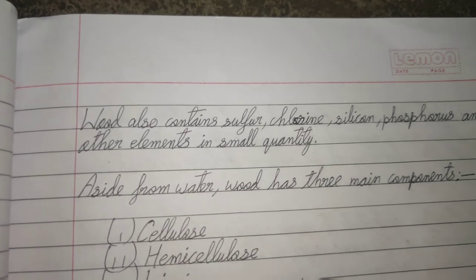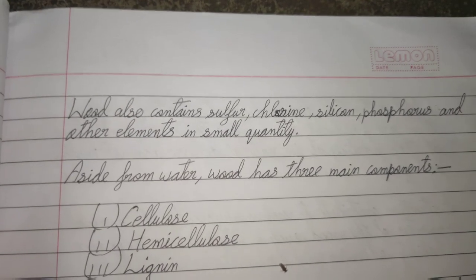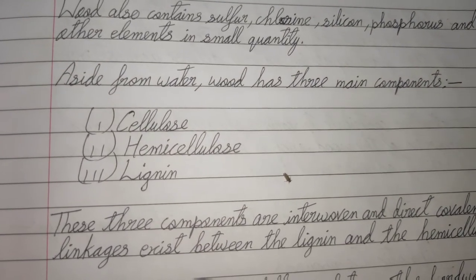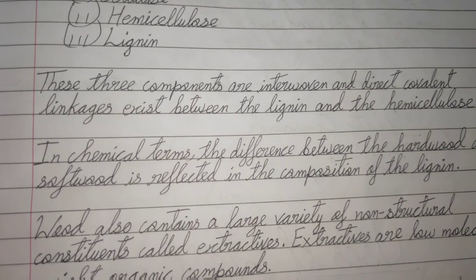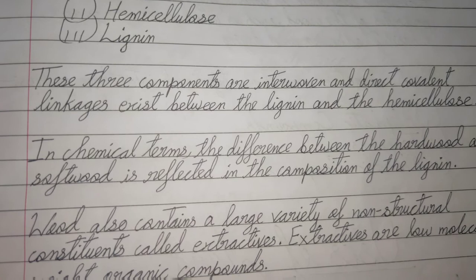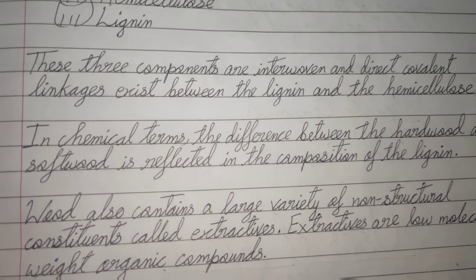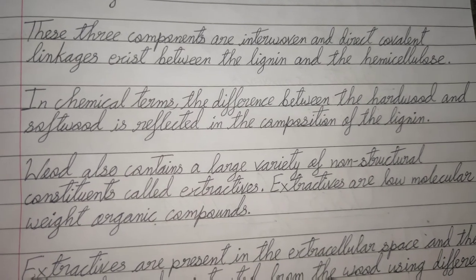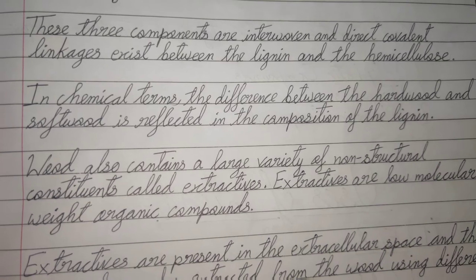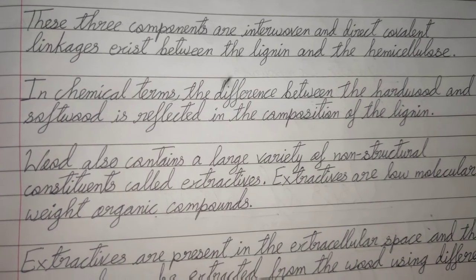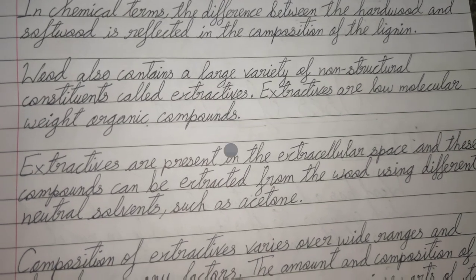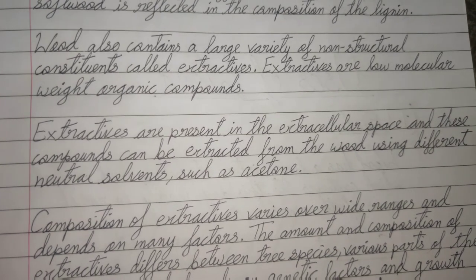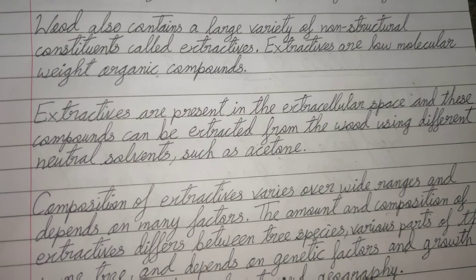Wood also contains sulfur, chlorine, silicon, phosphorus, and other elements in small quantities. Aside from water, wood has three main components: cellulose, hemicellulose, and lignin. These three components are interwoven and direct covalent linkages exist between the lignin and the hemicellulose. In chemical terms, the difference between hardwood and softwood is reflected in the composition of the lignin. Wood also contains a large variety of non-structural constituents called extractives, which are low molecular weight organic compounds present in the extracellular space and can be extracted using neutral solvents.